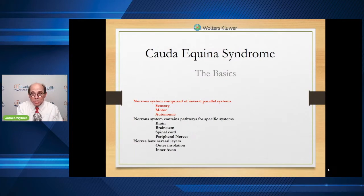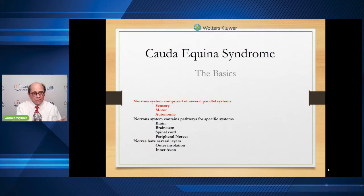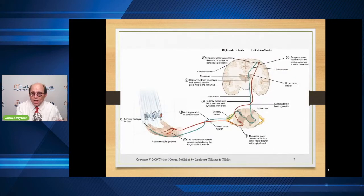There is the sensory system — touch and feel. There's the motor system, which allows you to move your muscles and talk; it's the muscle function. And the autonomic is a much smaller system that lays in the background, but it controls your heart rate, bowel and bladder, and blood pressure when you stand up so you don't get dizzy or lightheaded. So you have the autonomic, the sensory, and the motor.